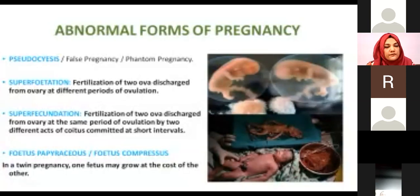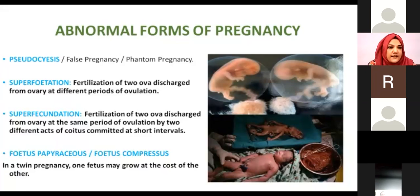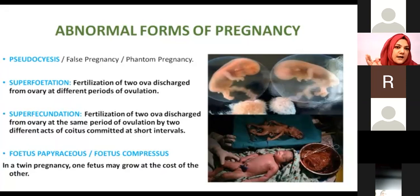Superfetation is a term used when there is fertilization of two ova discharged from different periods of ovulation — meaning the female becomes pregnant, and then in the next month she conceives again. In this case, one fetus outgrows the other: one fetus will have normal development, normal growth rate, and normal body weight, while the second fetus is compromised and will be one month behind in size and weight.